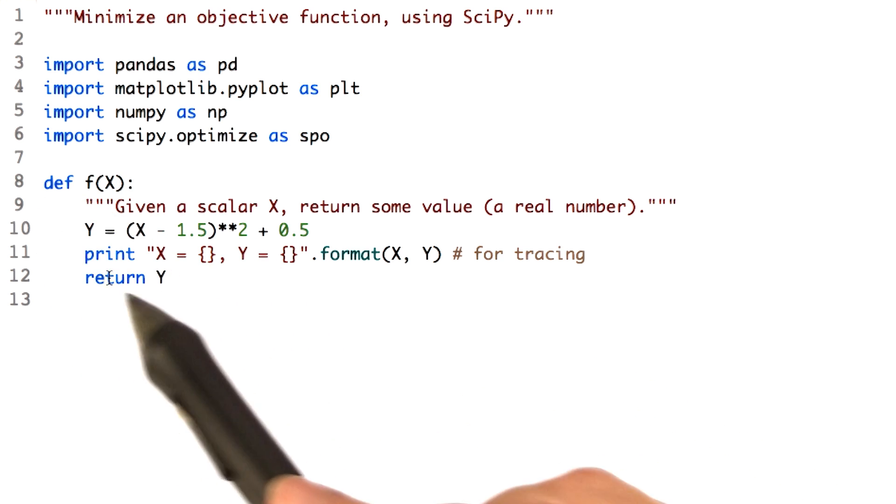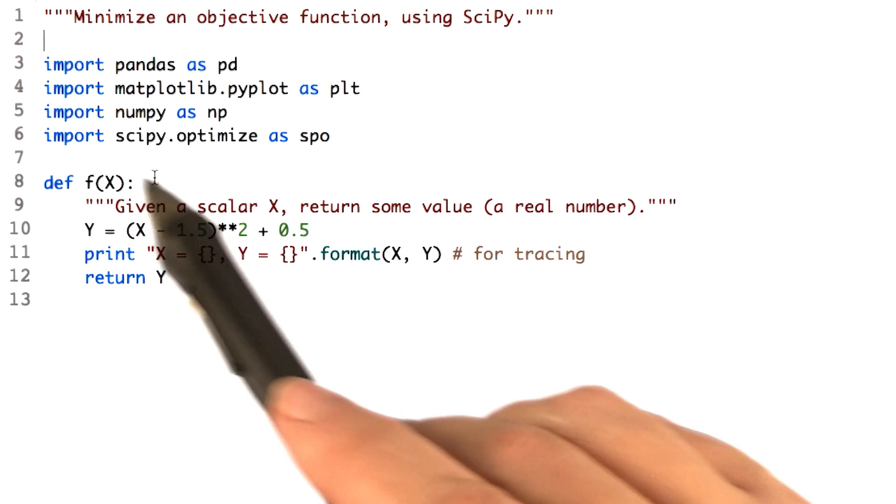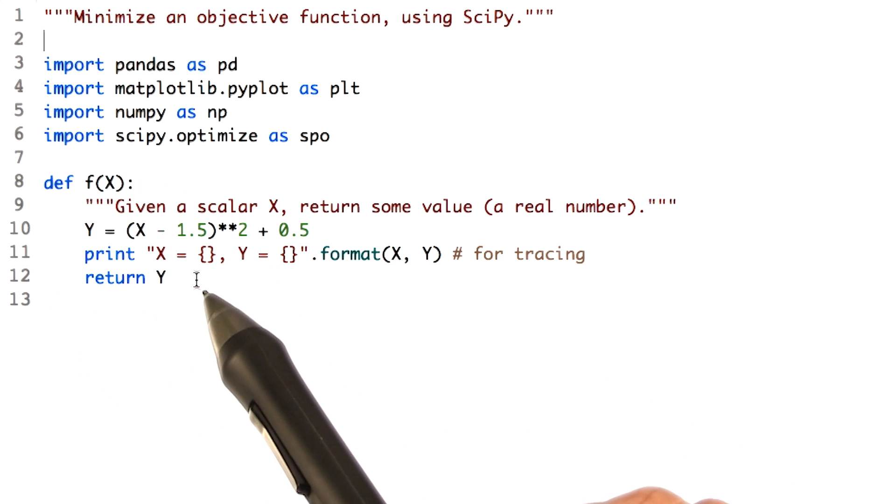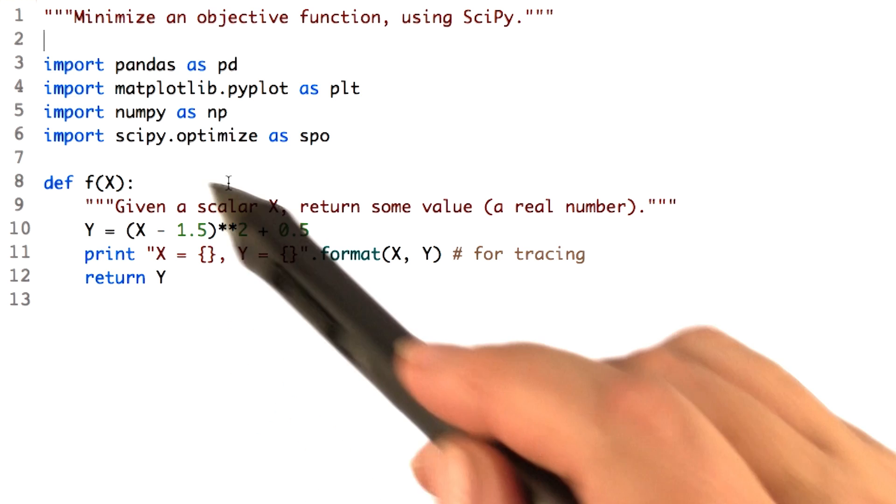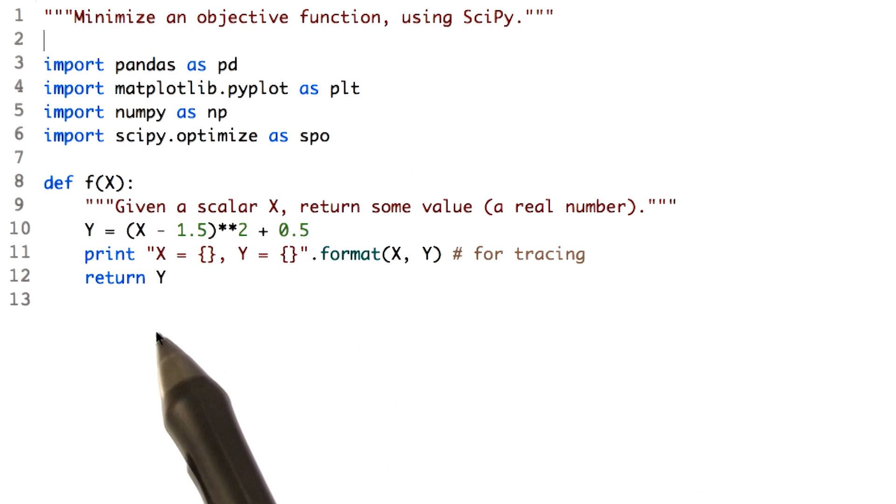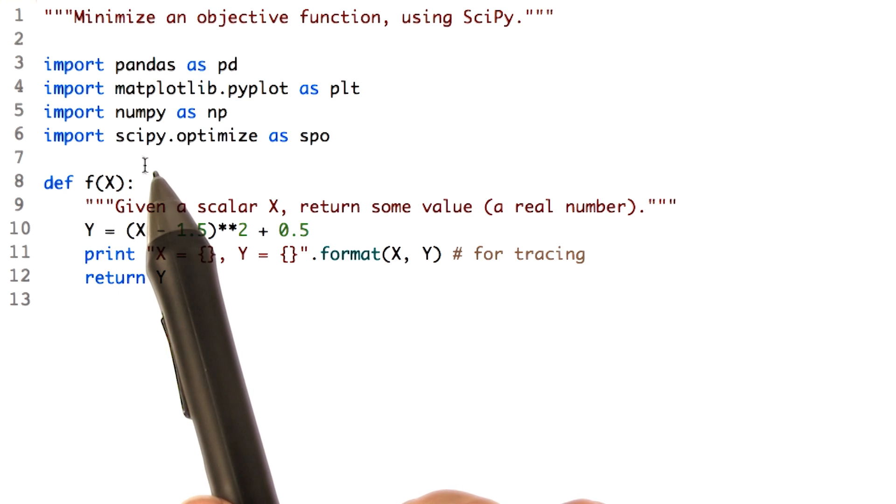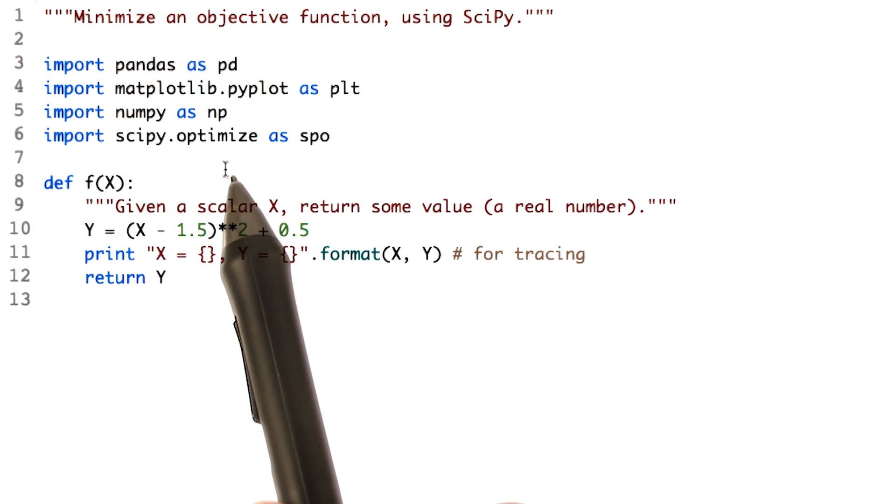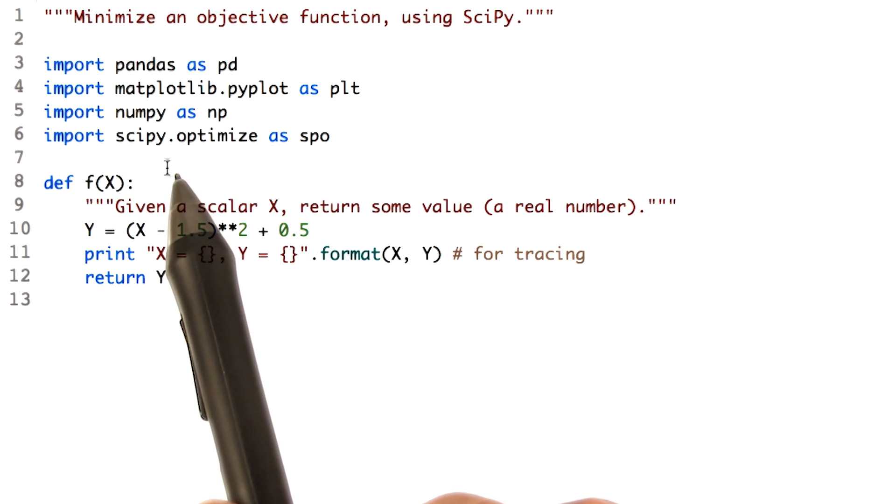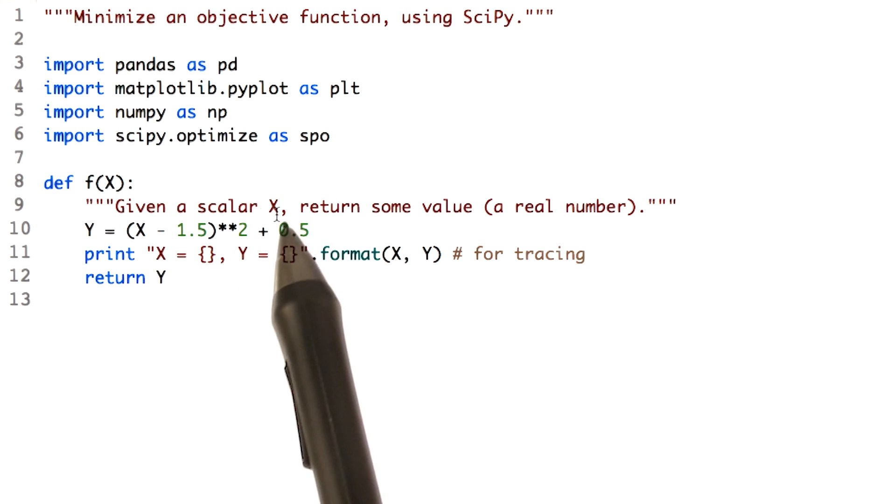Now, this is going to be the function that we're going to ask SciPy, or in particular, the optimizer to minimize for us. And by the way, we've included this optimize package as SPO. So SciPy.optimize as SPO.